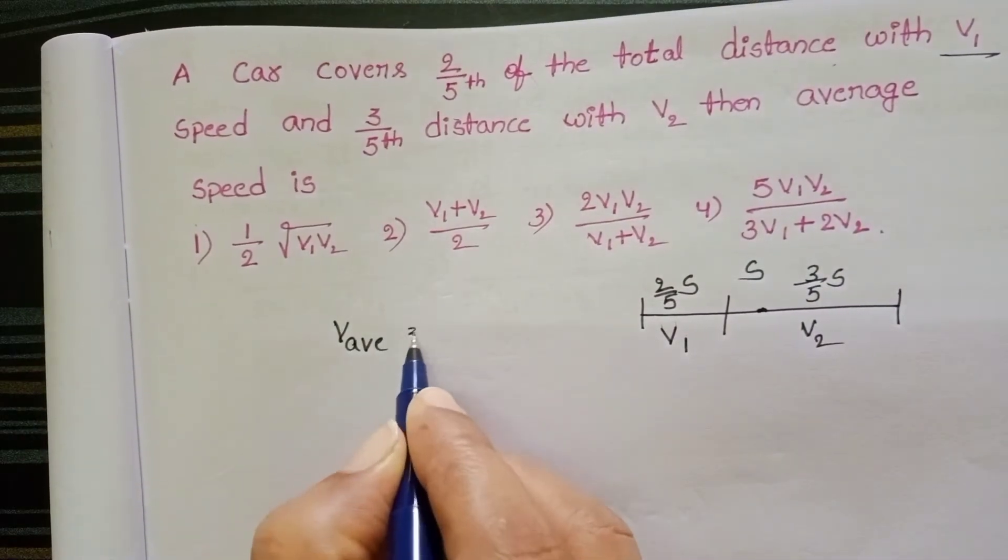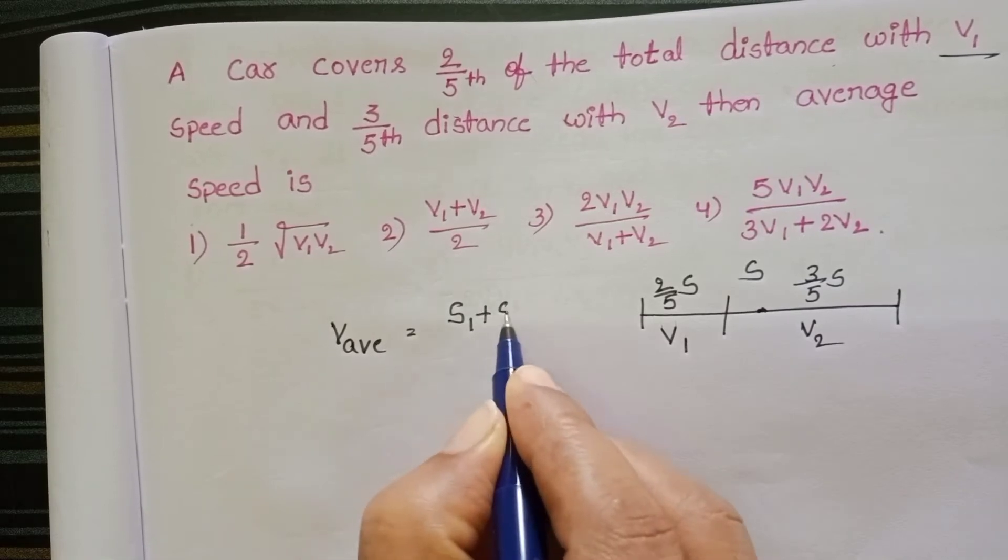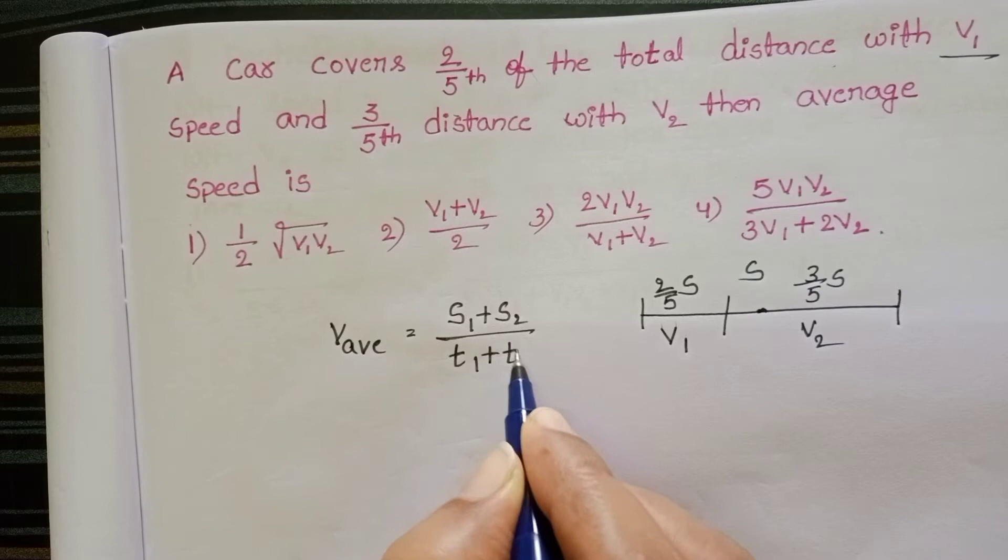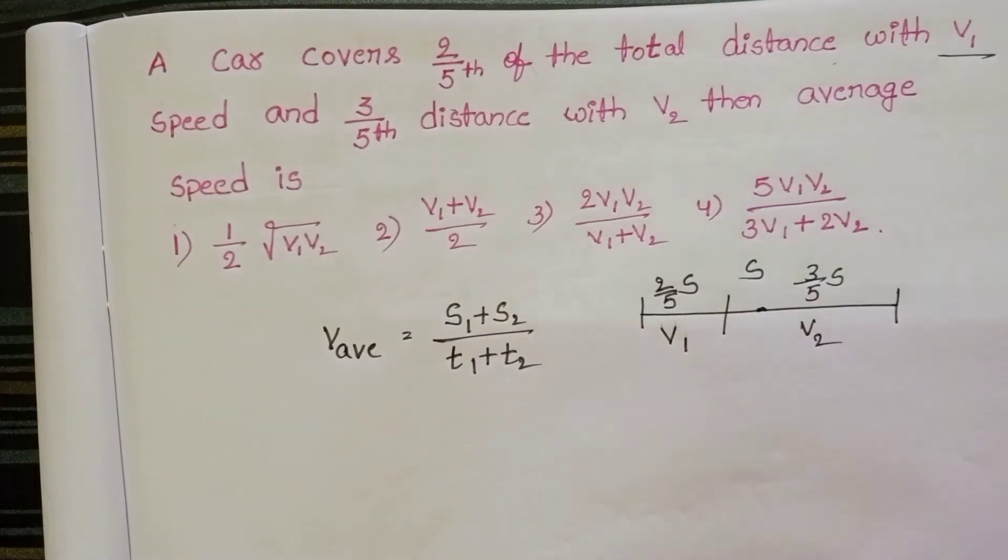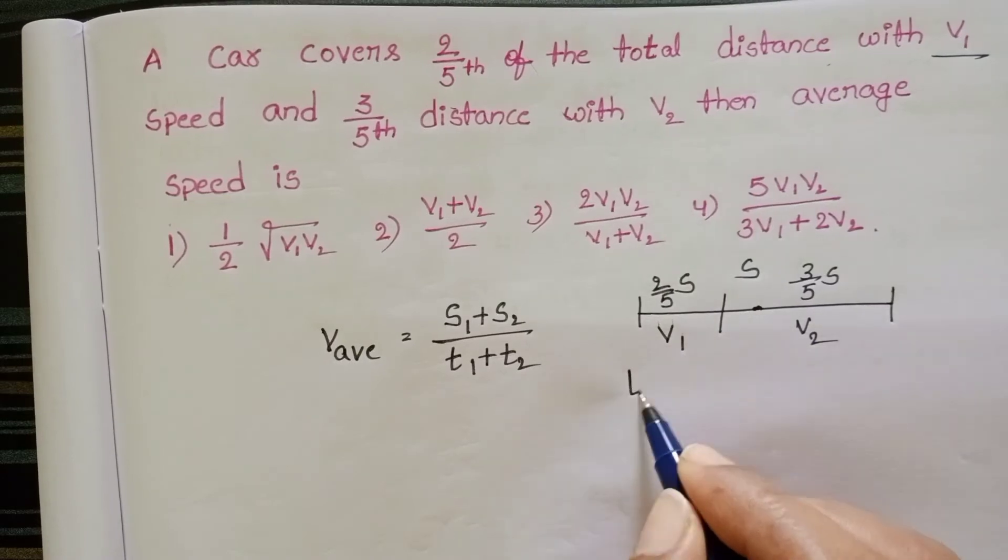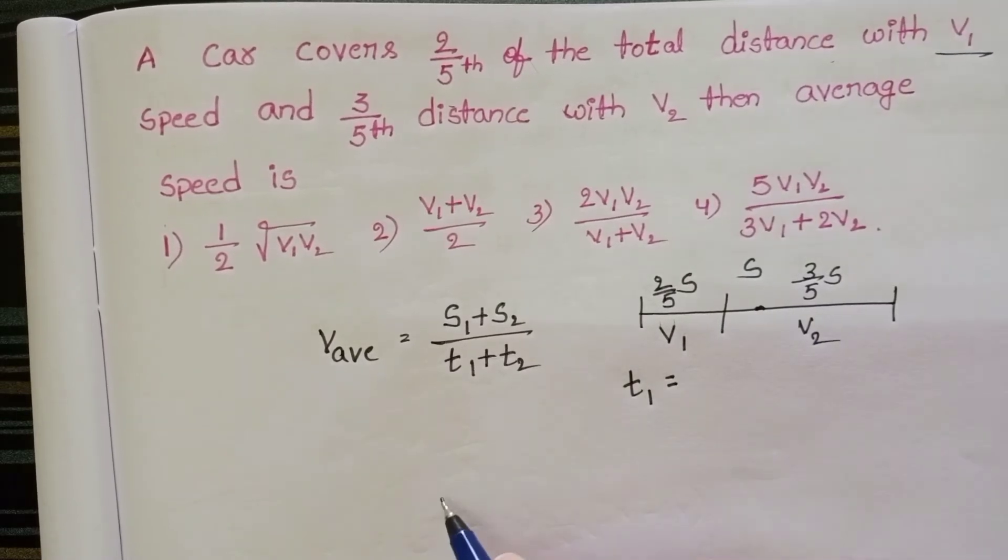Average speed equals total distance travelled by the body divided by total time taken, but in this question we don't know the time. Speed equals distance by time, so time equals distance by speed.